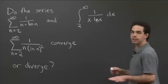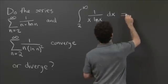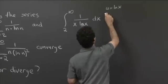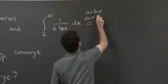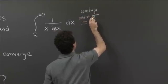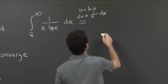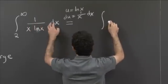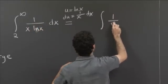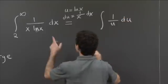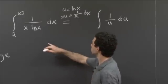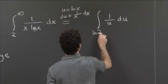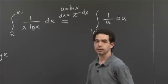So if we make the substitution u equals ln of x, then du is equal to 1 over x times dx. So this is the integral of 1 over x dx, that's du. And so it's 1 over u du. This was a definite integral, so I also need to change my bounds. So when x is 2, u is ln of 2, although the lower bound doesn't really matter very much when we do the integral test.